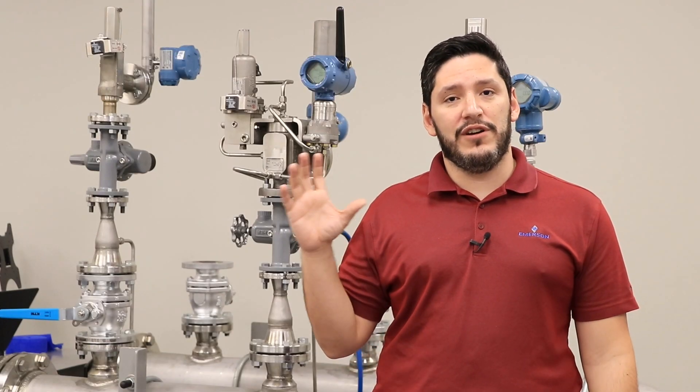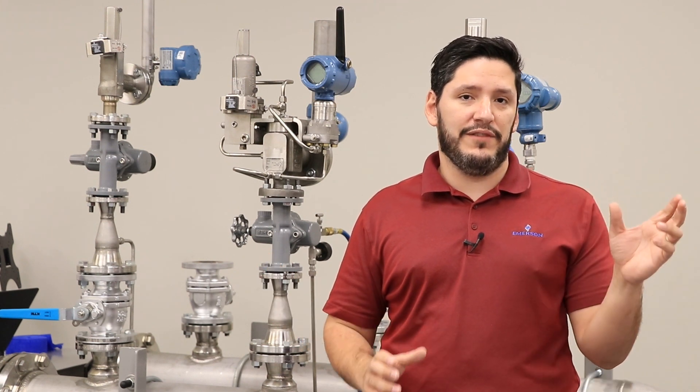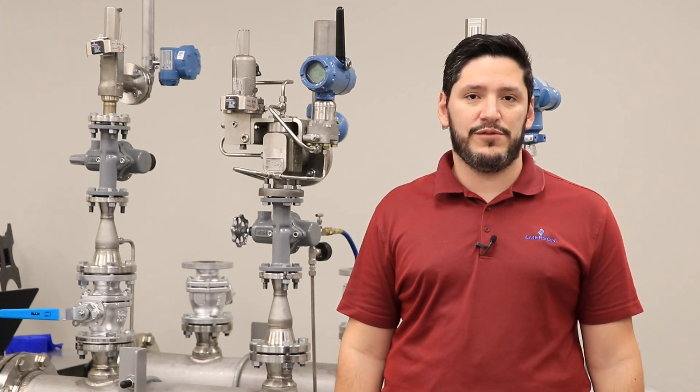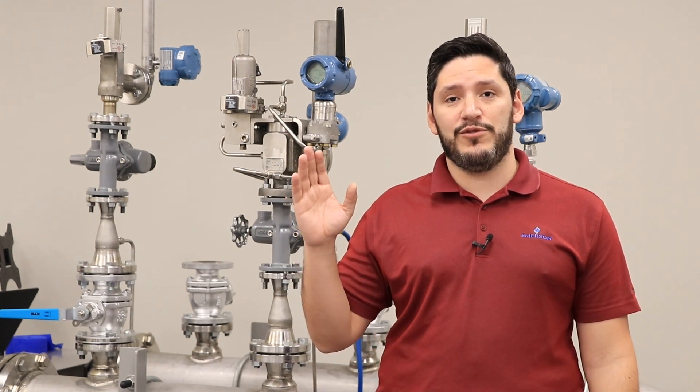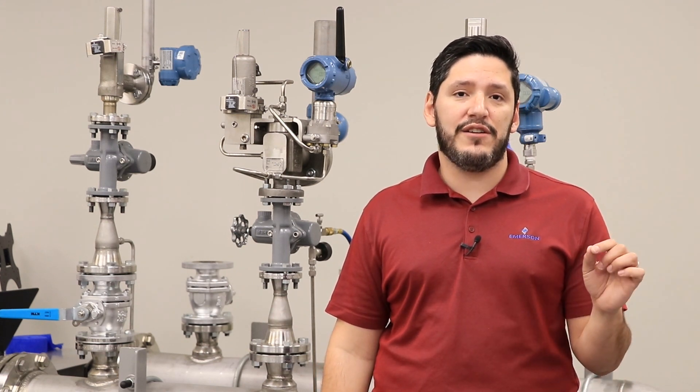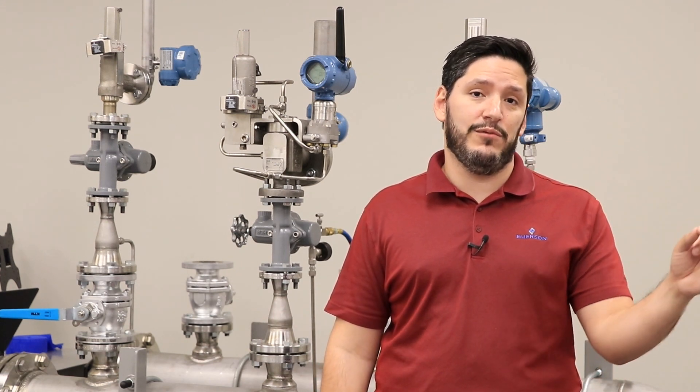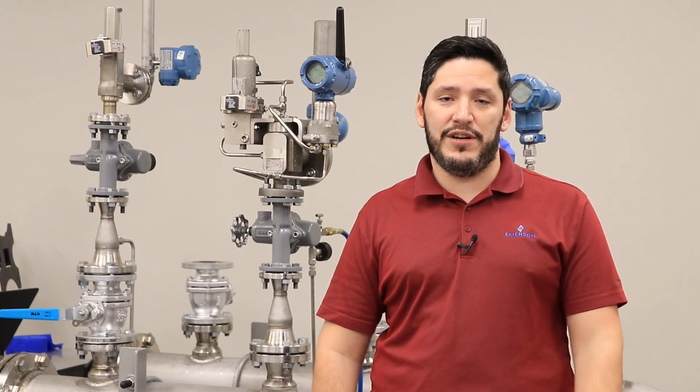We use a Rosemount 3051 or a Rosemount 2051 for our differential pressure transmitter and bellows leak detection solution. There are some benefits when we use the Rosemount 3051. The first one is accuracy. The accuracy on a Rosemount 2051 is 0.05% of the span calibration.